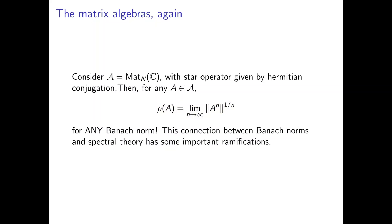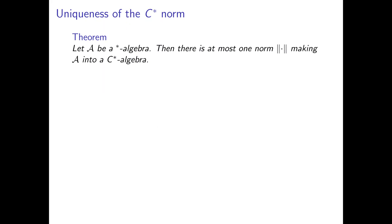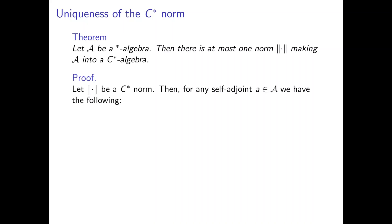More generally, this connection between Banach norms and spectral theory has some important ramifications. Today, as a final note, we're going to look at one of the most interesting ones from a C*-algebra perspective, which is the following: the C*-norm is unique in the sense that if we have a star algebra, then there is at most one norm that makes it into a C*-algebra. To prove this, let's assume we have some C*-norm on the algebra. Then for any self-adjoint element a, the norm of a squared equals the norm of a*a by the C*-property — and since a is self-adjoint, a squared equals a* times a.